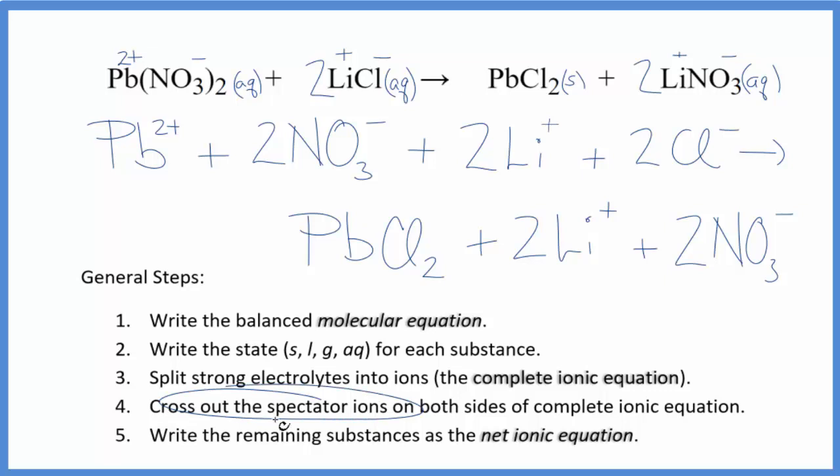Now we can cross out those spectator ions. They're on both sides of that complete ionic equation. So I look here in the reactants, I see I have two nitrate ions right here. And in the products. So let's get rid of those.